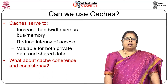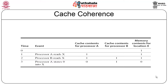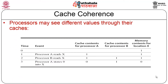In a memory hierarchy, when we looked at multiple levels of memory and had one block of data transferred from main memory to cache and the cache got modified, we had a consistency problem there. We either looked at a write-through protocol or a write-back protocol to ensure that both copies have consistent information. That was in a uniprocessor architecture. Now the same thing can be extended to a multiprocessor architecture.